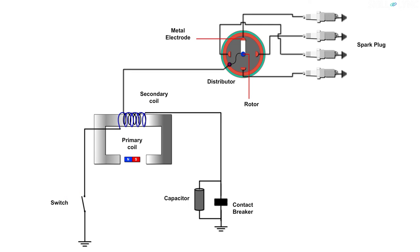First, the ignition switch is kept on. When the magnet rotates, the flux linkage with the coil changes which in turn develops an EMF in the primary coil. Because of this induced EMF, a low current flows in the primary coil. It flows through the contact breaker until it opens.